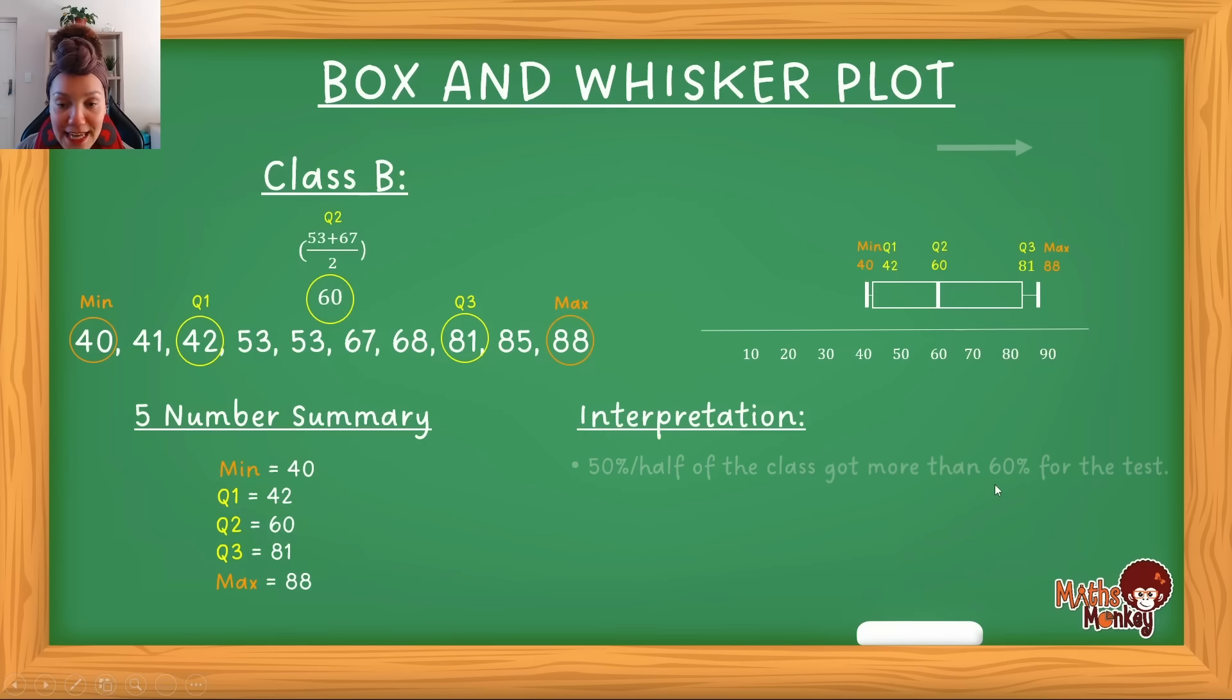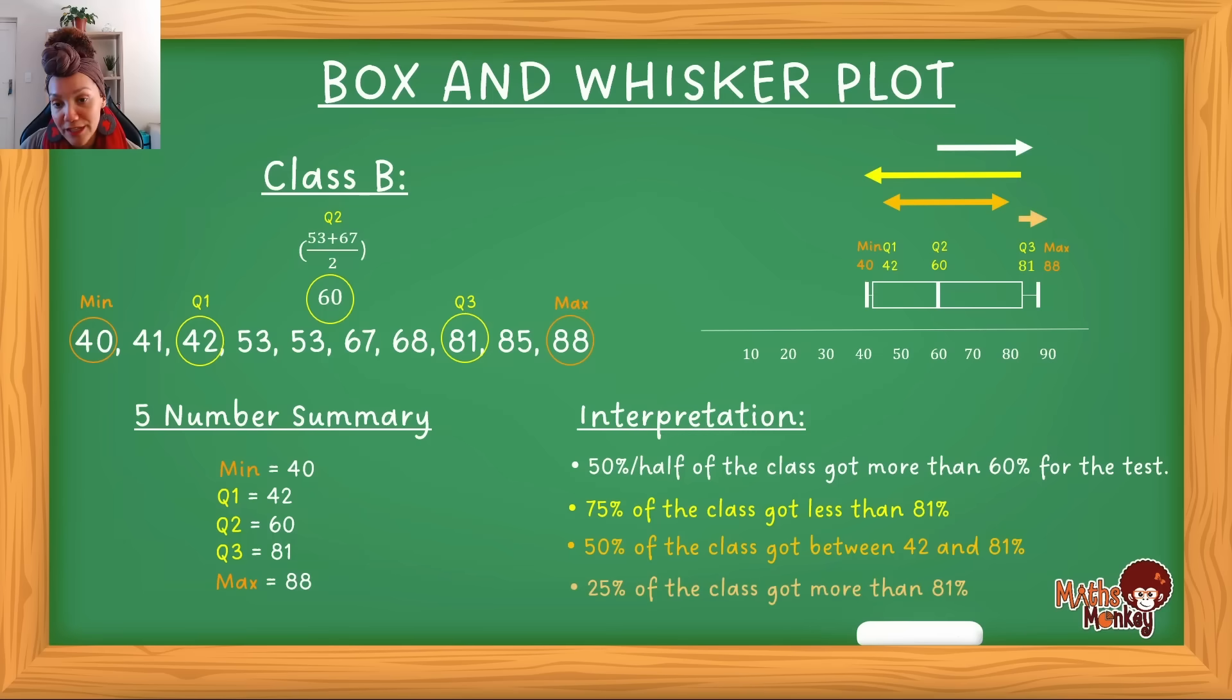Now, interpretation. Again, 50% or half the class got now above 60. Because you see this box and this section here, each of these counts 25%. So, that's 25 and 25. 50% got above 60% for the test. So, remember, this is 50% of the class, not 50% for the test. You must remember the difference here. Then, 75% of the class got less than 81%. That you can see because we've got this. So, even though this is a little section here, this still represents 25%. This is 25% is 50 and this is 75. So, 75% got less than 81. Then, 50% of the class got between 42 and 81. That's the box section of this plot. And then, lastly, 25% of the class got more than 81%. And that's how you interpret the box and whisker plot.